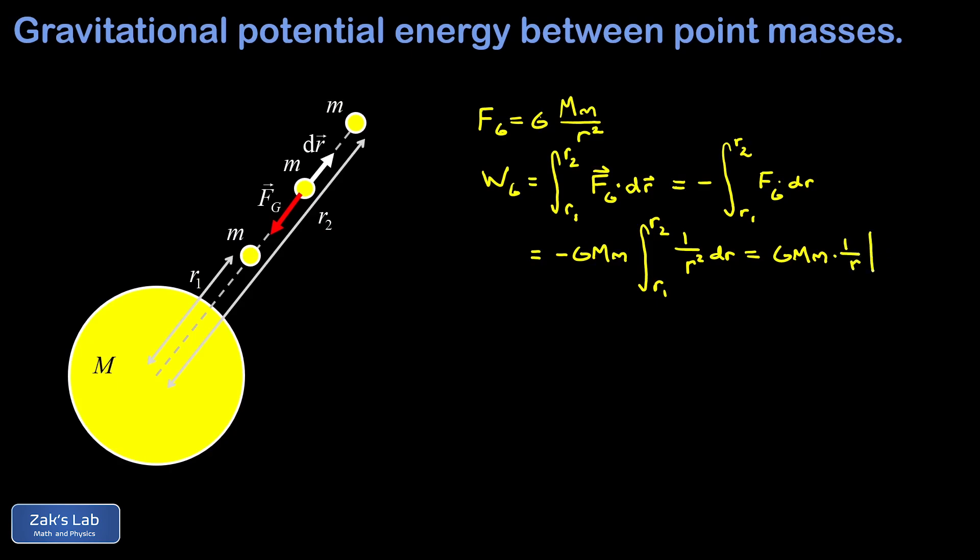We need to evaluate this from R1 to R2. When we sub in the upper limit, we get a 1 over R2, and then the lower limit, we subtract that, and we get 1 over R1. So there's the work done by gravity as we travel this path from the initial to final position.